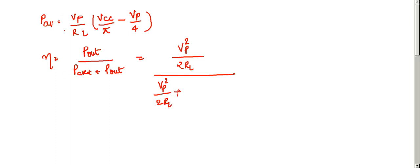p-circuit. Here, we have computed the average power for only one transistor when only q1 was on. Now, for considering the two transistors, we can write p-circuit as 2 into vp upon RL, vcc upon pi minus vp upon 4.